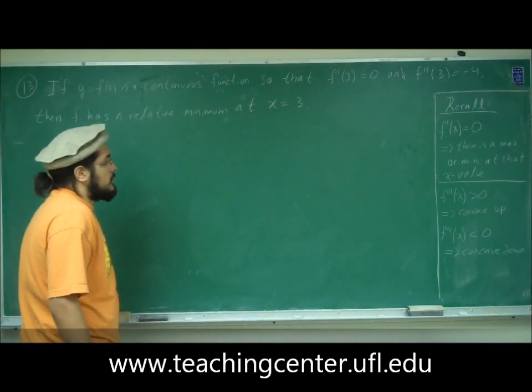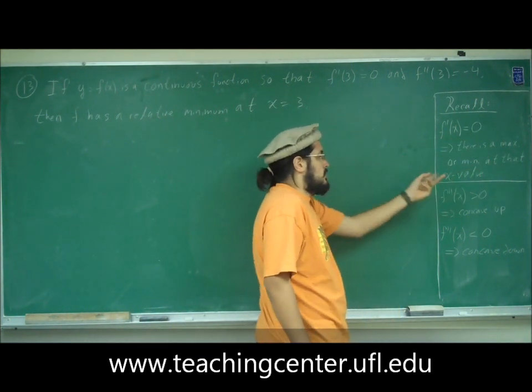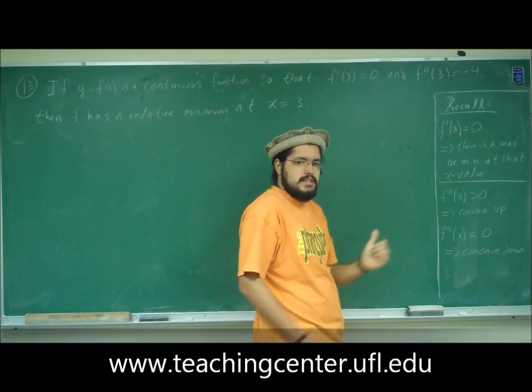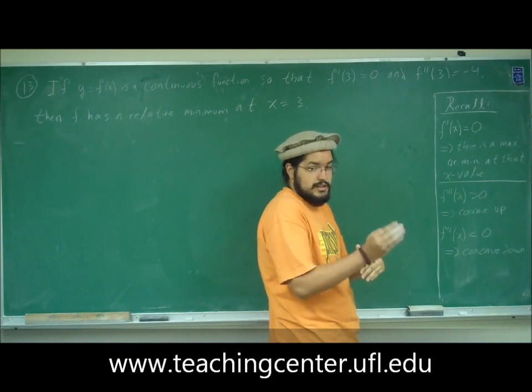So quickly, let's recall, if f prime of x is equal to 0, then this implies one of two things. There's a maximum at that x value or a minimum at that x value. To determine max or min, we need to see if it's increasing then decreasing, or decreasing then increasing.